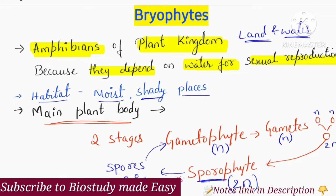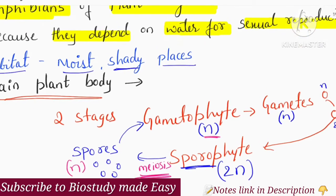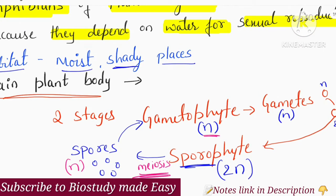This diploid sporophyte produces spores through meiosis. So meiosis produces spores. These spores are haploid and develop into the gametophyte, which is also haploid. So: gametophyte is haploid and sporophyte is diploid.